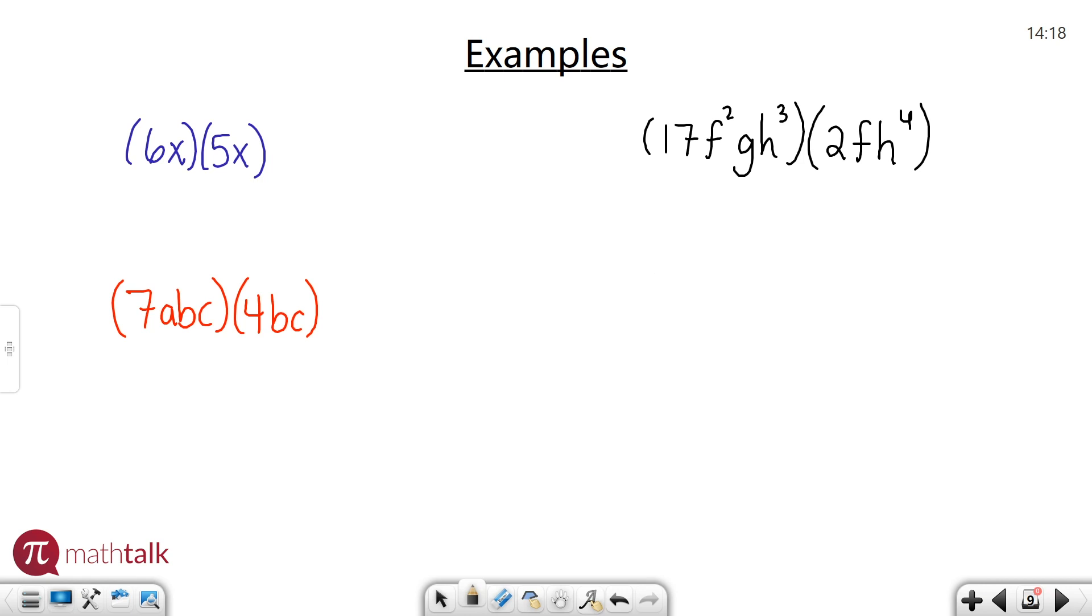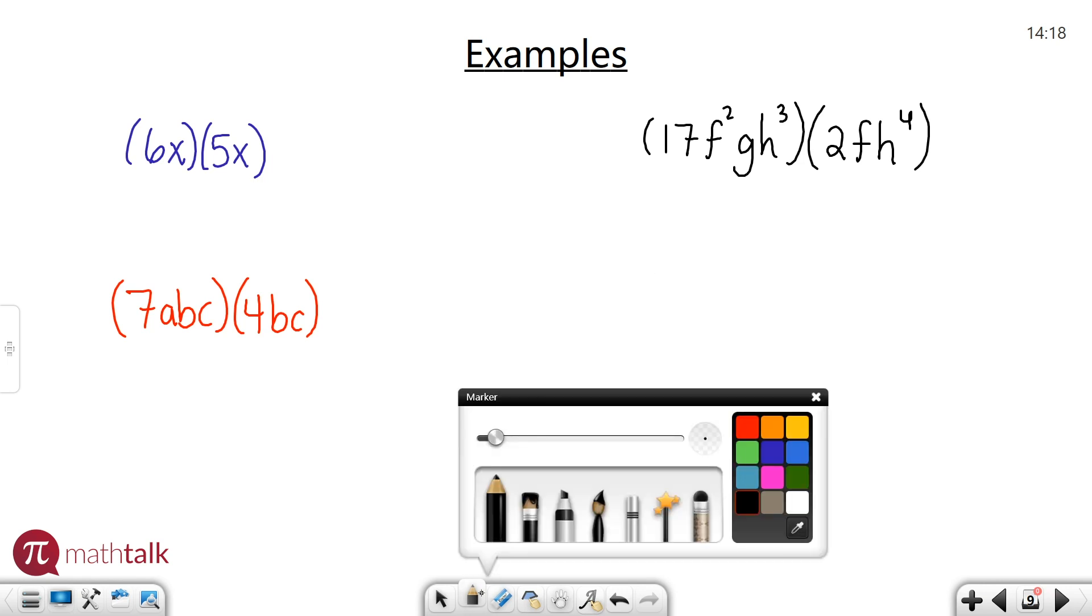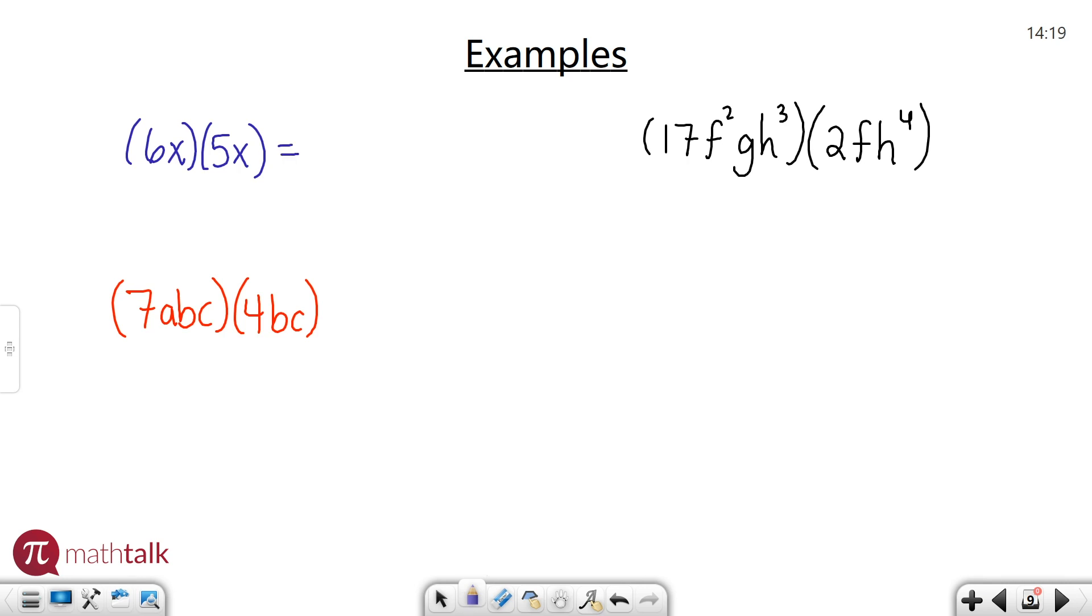I have three different examples. First one: 6x times 5x. We have the same variable, they're both X's, and we're multiplying them together. The easy part is the numbers—just multiply them together. 6 times 5 is 30. Since they're both X's, we have x to the first times x to the first, so we keep the X and add the exponents. 1 plus 1 is 2, giving us 30x².